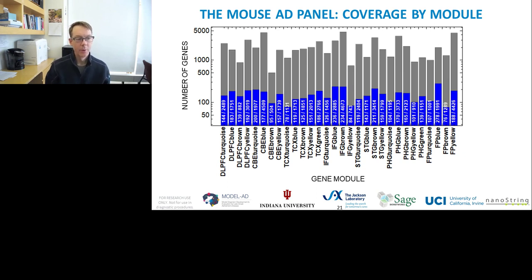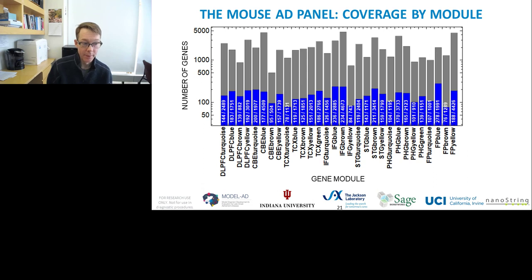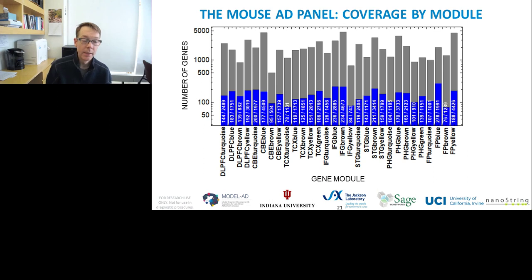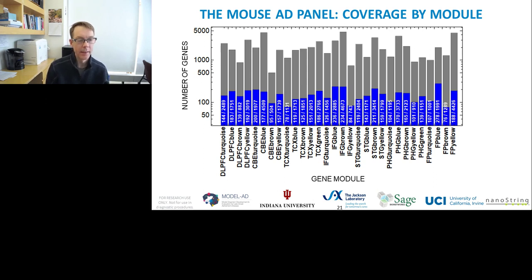Our coverage ranges from about 78 to over 200 genes per module. Note that many modules have thousands of genes — some up to almost 5,000 — which is why we're on a log scale. The smallest modules are about 500 genes. We wanted to cover these modules evenly, so there's at least 5% coverage in every module, and we've picked the most central genes to the various dimensions within each module. This gives us a pretty comprehensive overview of what pathologies related to Alzheimer's disease — at least at the RNA level — a given mouse might be showing.